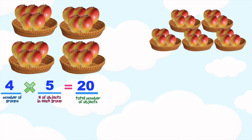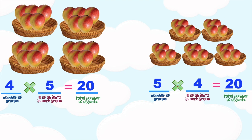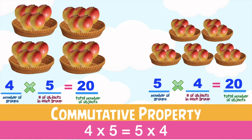Now with this illustration, the number of groups is five, and the number of objects in each group is four. The total number of objects is 20. So 4 times 5 is equal to 5 times 4 because their products are the same. This is the commutative property — even though the order of the factors is interchanged, their products will remain the same.